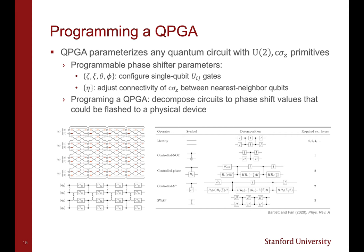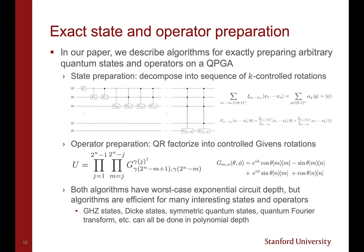and η, which can be set to 0 or π/2 to adjust the connectivity of the controlled-Z gates between nearest neighbor qubits. By programming a QPGA, we mean the process of decomposing a desired quantum circuit into phase shift values which could be flashed onto a physical device.